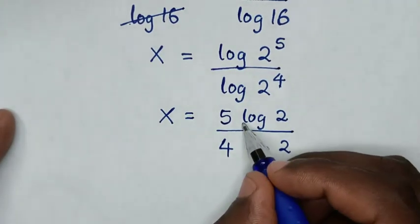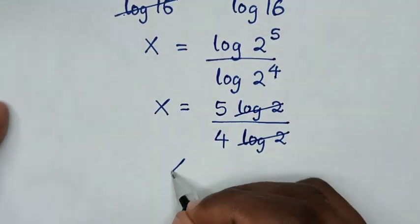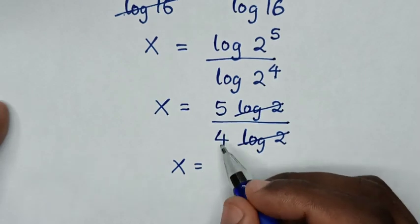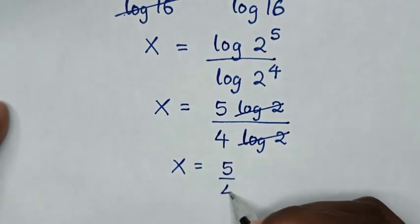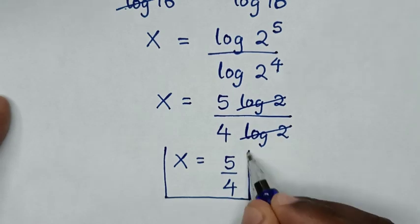Then this log of 2 will cancel with this log of 2, so it will be x is equal to 5 over 4. So this is our final answer.